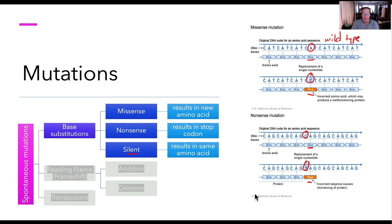The last type is a silent mutation. In a silent mutation, we might replace one base with another, but it results in the same amino acid. If you go back to your codon table from Chapter 7, you'll see that most amino acids are encoded by more than one codon. If a mutation occurs in the third position of a codon, most of the time it won't result in any change in amino acid sequence. So in this case, we have a change in the genotype, but not a change in the phenotype.